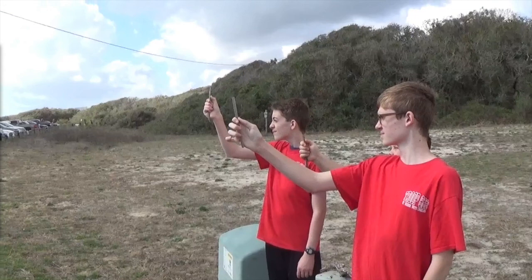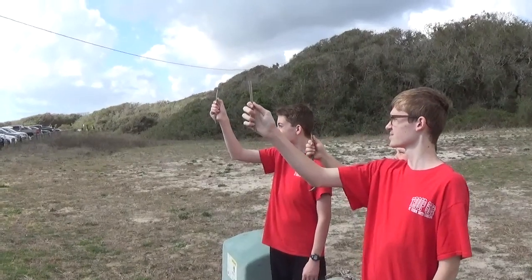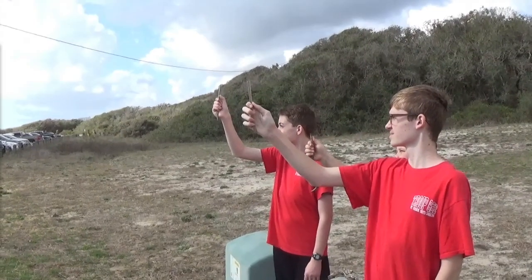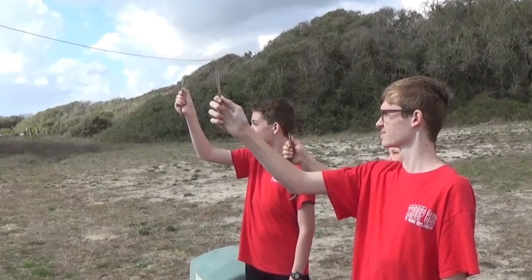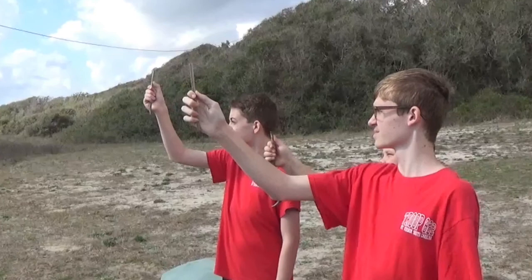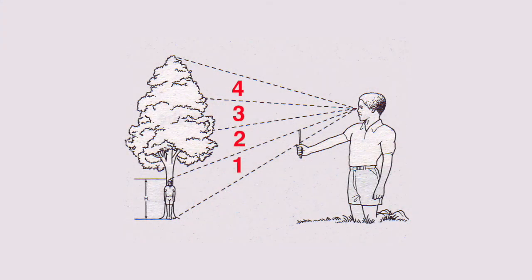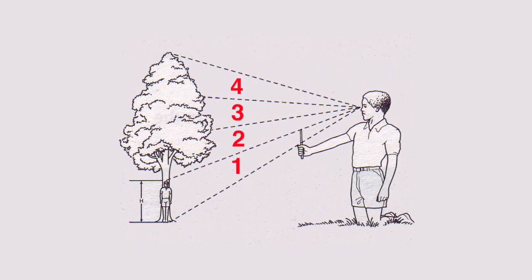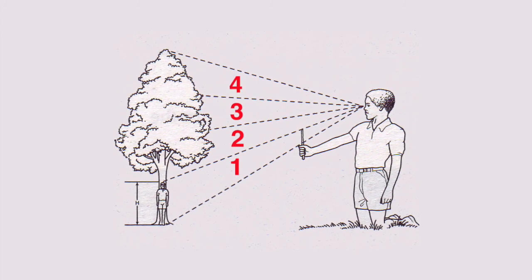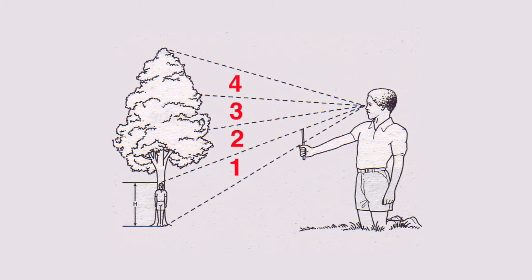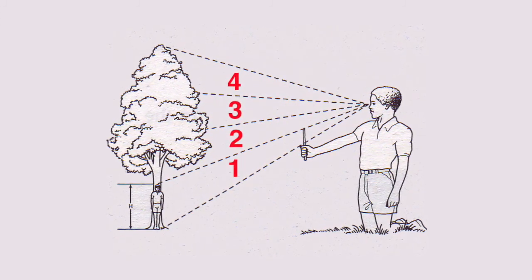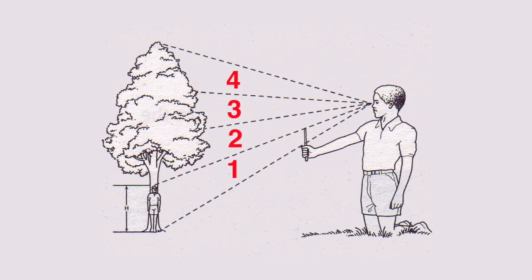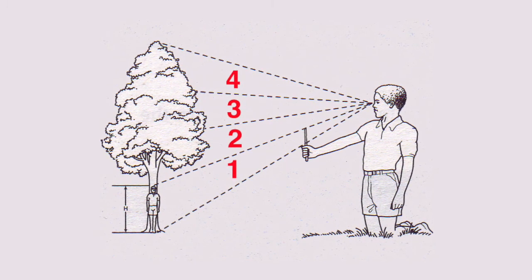With your eye fixed on the point where the top of the stick is positioned on the tall object, move the stick up again, replacing the top of the stick with your thumbnail. This is measurement 3. Continue doing this, keeping track of how many measurements it takes to reach the top of the tall object. To calculate the height, multiply the amount of measurements by the height of the person standing next to the tall object.